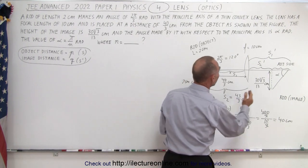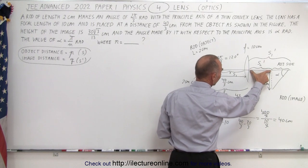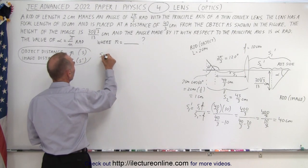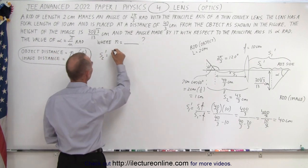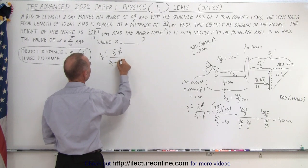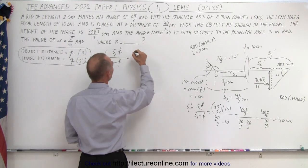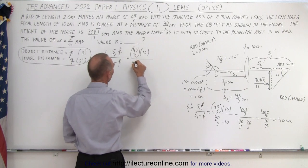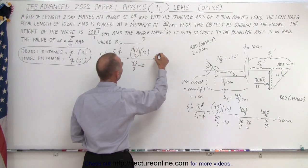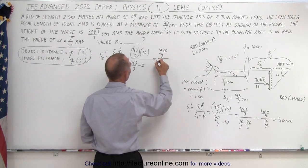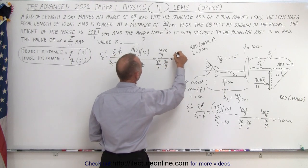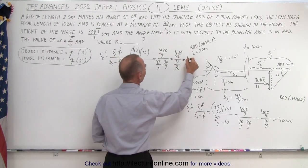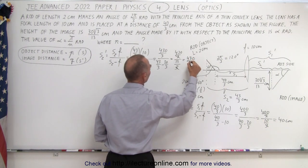We have s1 prime = 40 cm. Now we need to find s2 prime. s2 prime = s2 × f / (s2 − f) = (43/3 × 10) / (43/3 − 10) = (430/3) / (43/3 − 30/3) = (430/3) / (13/3). The 3s cancel, giving s2 prime = 430 over 13 centimeters.